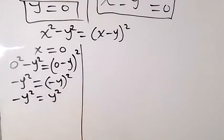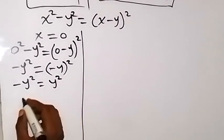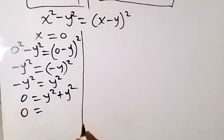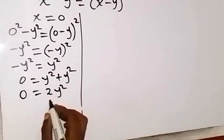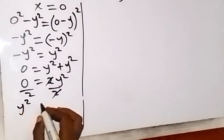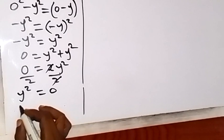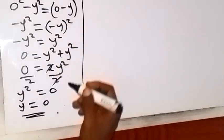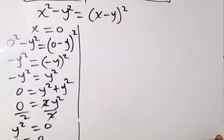Taking minus y squared to the other side gives 0 = y squared plus y squared, so 0 = 2y squared. Dividing both sides by 2 gives y squared = 0. Taking the square root of both sides gives y = 0. So when we put x = 0, we get y = 0.